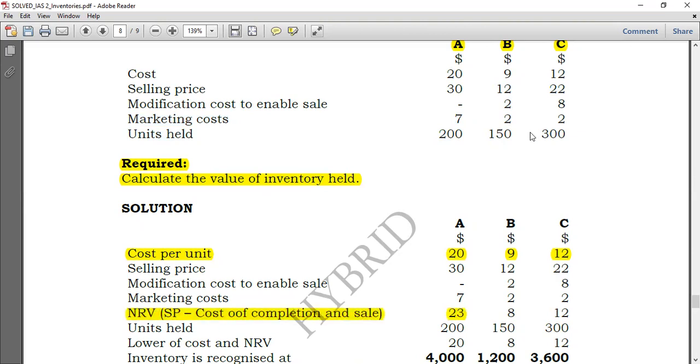And then you proceed this for both product B and C. Now for product B, I'll take the selling price, which is 12, modification cost minus 2, and marketing cost minus 2, which will be 8, as you see it here. And lastly, for product C, I'll take the selling price that is 22, less cost for modification minus 8 and minus 2, which is marketing cost. So 22 minus 8 minus 2, I will remain with 12 here.